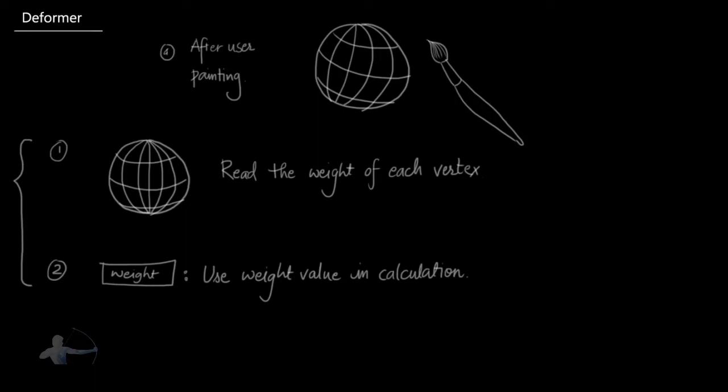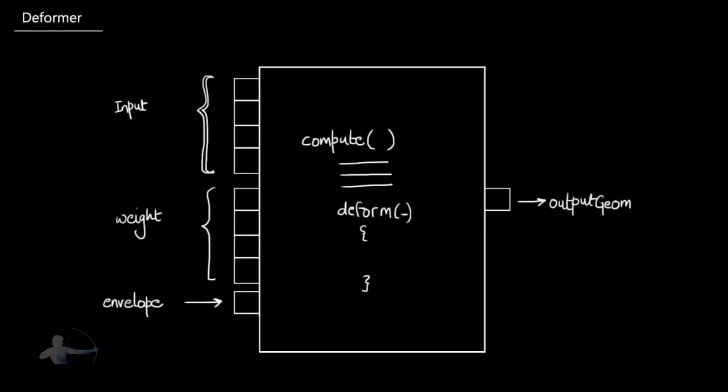The deformer node which we have studied so far comes with a couple of attributes and functions. Input weight list and envelope are some of the attributes discussed in previous tutorials, and compute and deform functions were also discussed. Now we will explore the deformer node a little bit more and we will see one more attribute — weights — and one more function — weightValue.